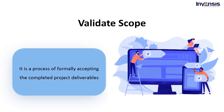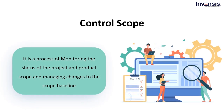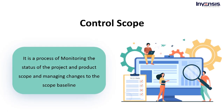The third process is to validate scope. It is simply the formal procedure to accept the completed project deliverables. This process is performed periodically and belongs to the scope management knowledge area. The next process is control scope, which allows you to monitor the status of the project and product scope and manage changes to the scope baseline. This process can occur throughout the project and belongs to the scope management knowledge area.